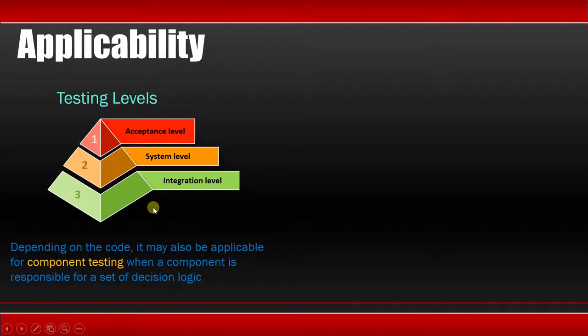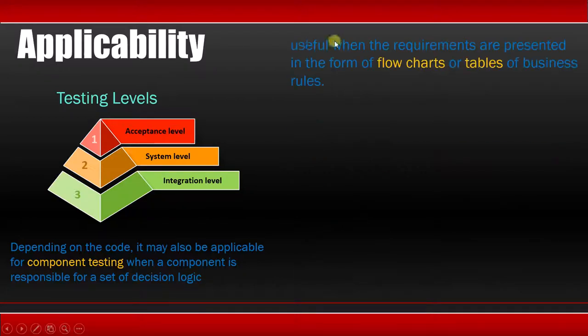The next very important point is: cause-effect graph is useful when the requirements are presented in the form of flowcharts or tables of business rules. If you have a requirement and if that requirement can be represented in the form of flowchart or table, then only a cause-effect graph is an effective technique. Otherwise not.